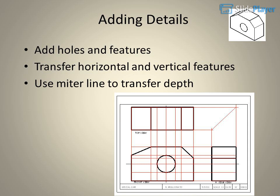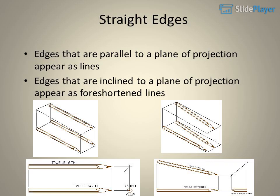Transfer horizontal and vertical features, and use a mitre line to transfer depth. Straight edges that are parallel to a plane of projection appear as lines. Edges that are inclined to a plane of projection appear as foreshortened lines.